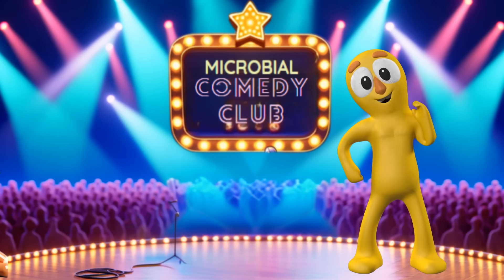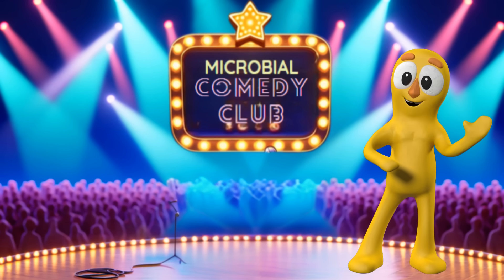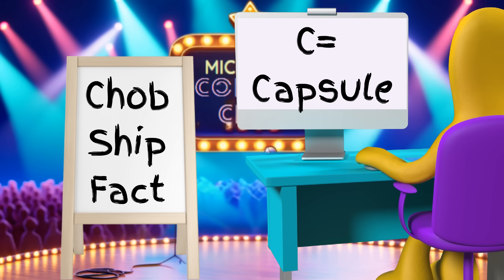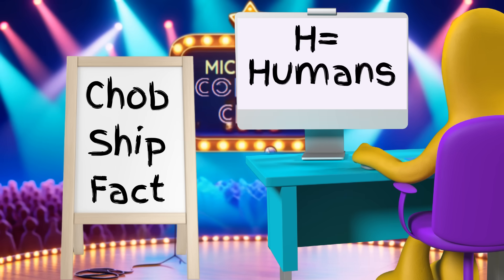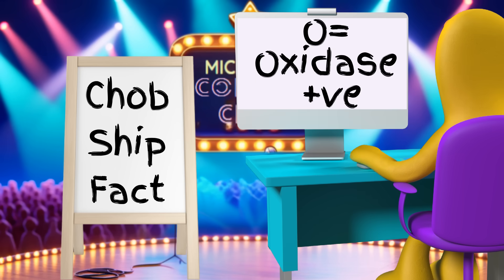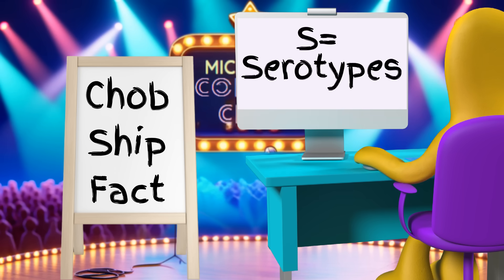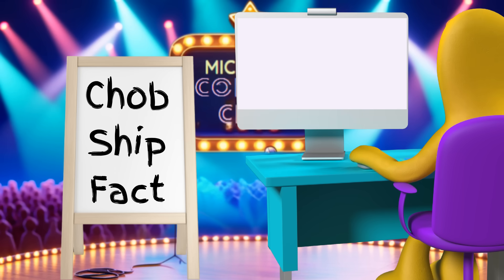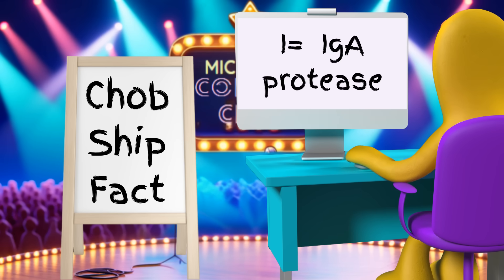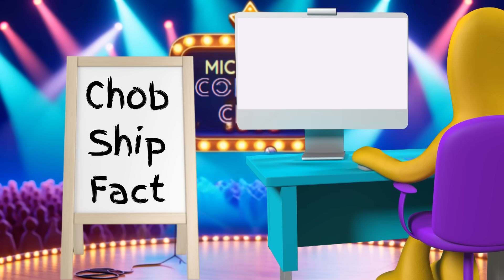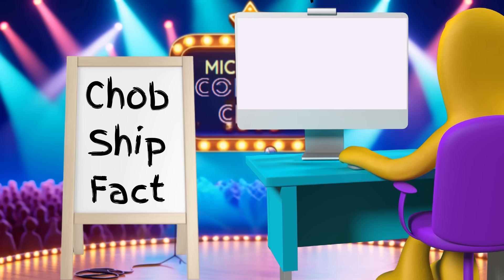So there you have it — the life and times of Haemophilus influenzae, straight from Hank himself. Remember the mnemonic CHOB SHIP FACT: C = Capsule (typeable strains have a capsule; HIB is the most virulent); H = Humans (only known reservoir); O = Oxidase positive; B = Biofilms formed by H. influenzae; S = Serotypes (typeable and non-typeable strains); H = HIB vaccine reduces invasive disease; I = IgA protease helps in immune evasion; P = Polysaccharide capsule (HIB's virulence factor); F = Facultatively anaerobic; A = Adhesins aid in colonization; C = Chocolate agar needed for growth; T = Transmission via respiratory droplets.